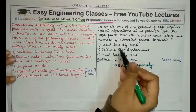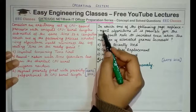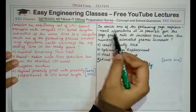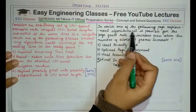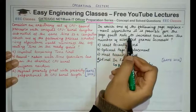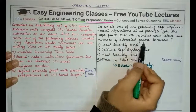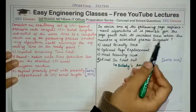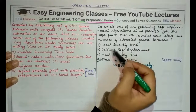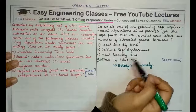We'll start with the second question first. The question says: in which one of the following page replacement algorithms is it possible for the page fault rate to increase even when the number of allocated frames increases? We are given four options — names of page replacement algorithms.